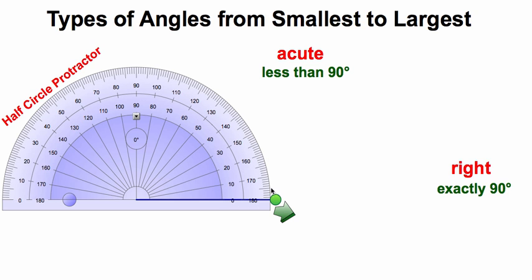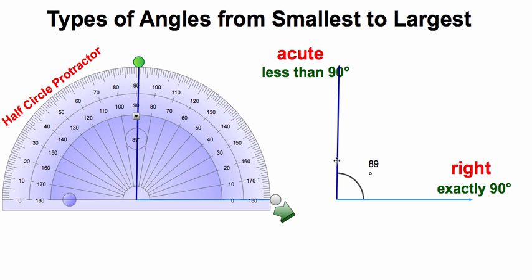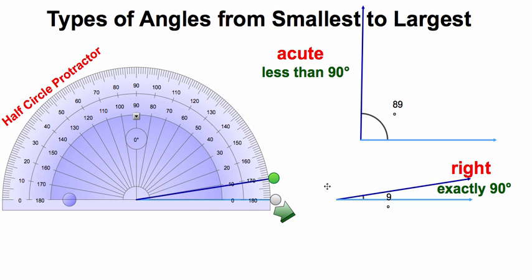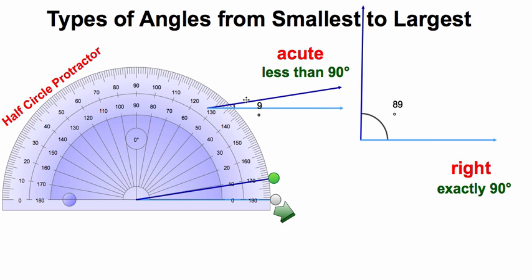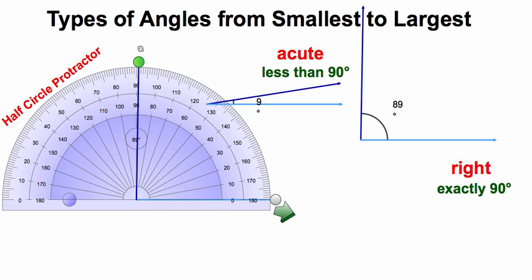If we look at our half circle protractor and we bring one of our sides up to straight 90, this is a 90 degree angle. Acute is going to be anything less than that. So if we go down to 89, that would be an acute angle. If we go down to 10, that would also be an acute angle. Anything between here and all the way here is going to be acute — less than 90 degrees.